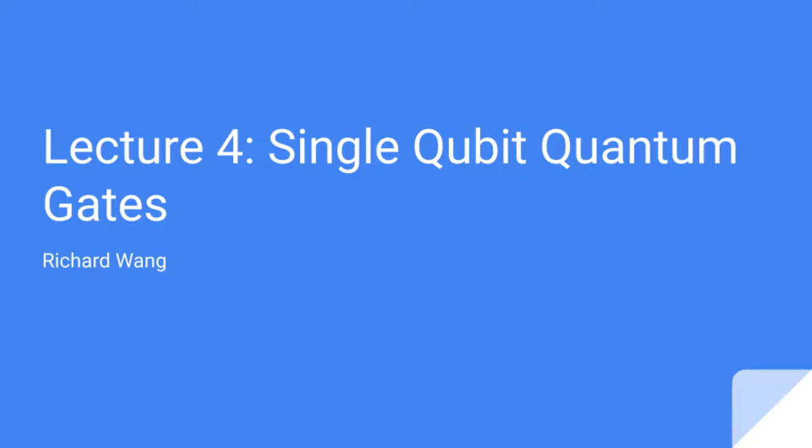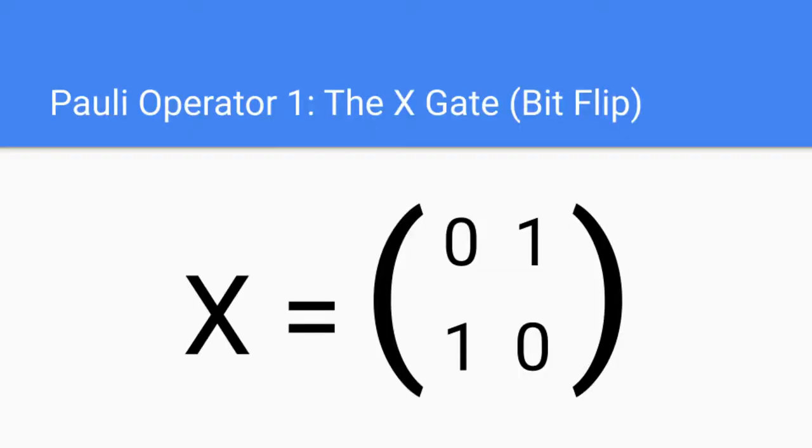Hello everyone, and welcome back to lecture 4 in our introductory course to quantum computing. Today we'll be talking about single qubit quantum gates. Specifically, we'll be talking about two single qubit quantum gates: the first one is the X gate, and the second one is the Z gate.